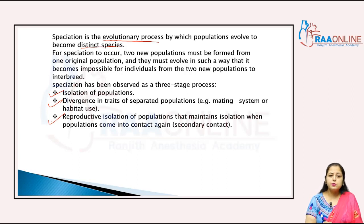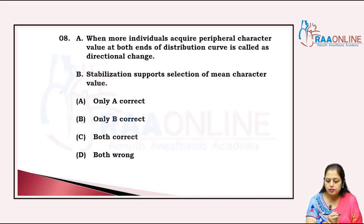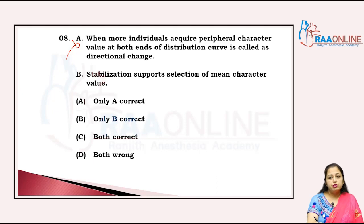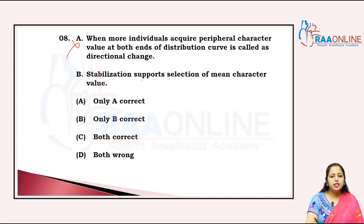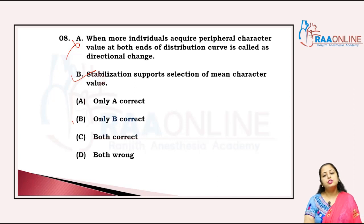All three stages are necessary to complete the process of speciation. Now, when more individuals acquire the peripheral characters at both ends of the distribution curve, it is called disruptive change, not directional change. And stabilization supports the selection of mean character value — that is correct. So the answer is only B is correct; A is wrong.